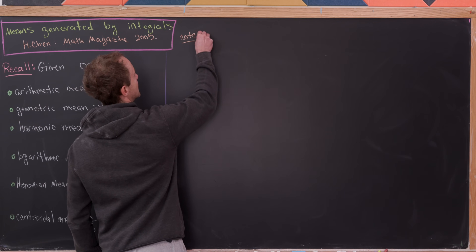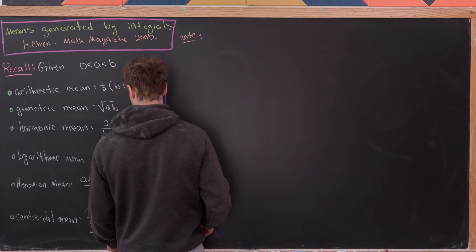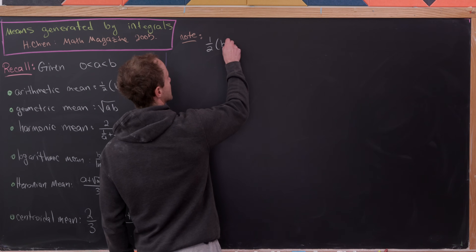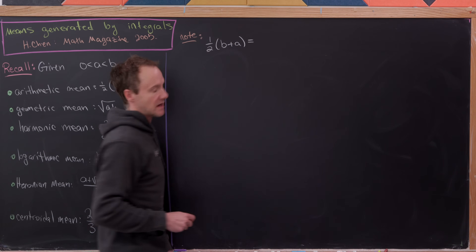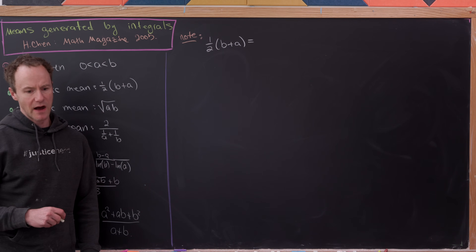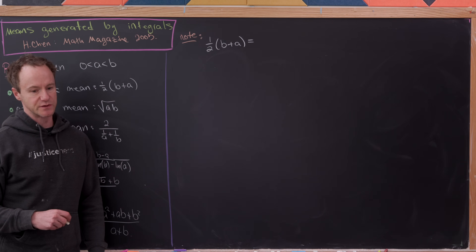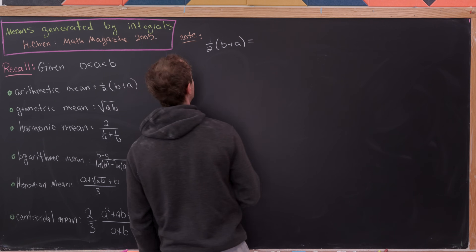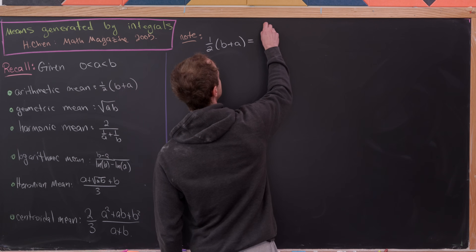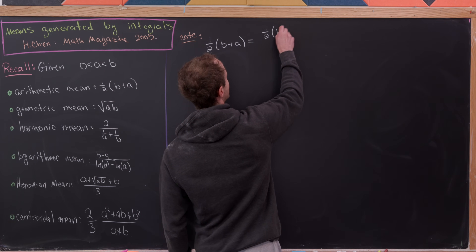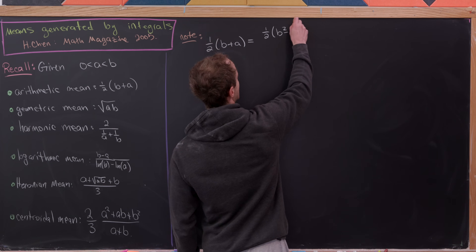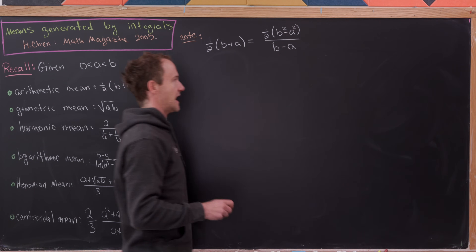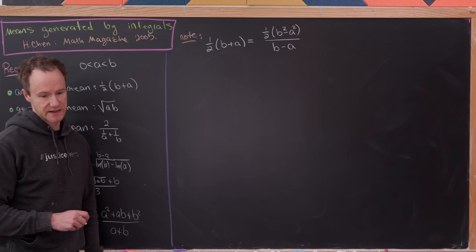Let's note that we can take the arithmetic mean, (1/2)(b + a), and multiply both the numerator and denominator by (b minus a). That leaves us with (1/2)(b² - a²) all over (b - a).